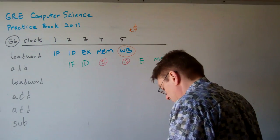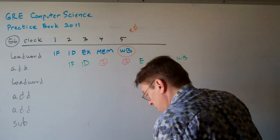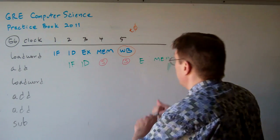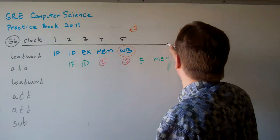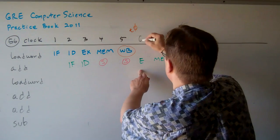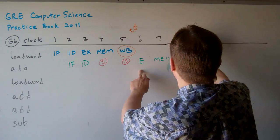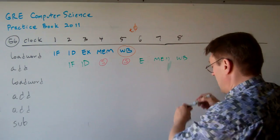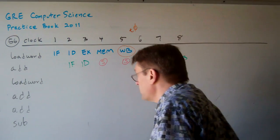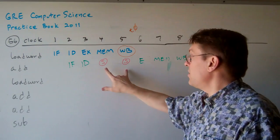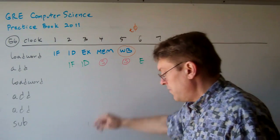Let's go ahead and continue out here — all these other things: six, seven, eight. So we've got stalls here — that's two stalls so far.